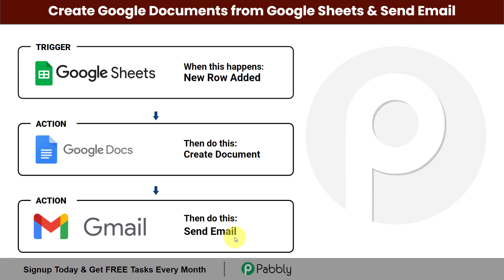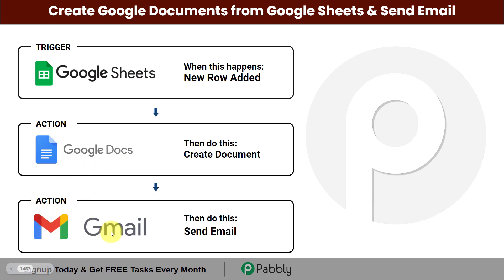To do this, I will have to integrate Google Sheets with Google Docs and Gmail, and I can do the same using Pabbly Connect. Here my trigger will be Google Sheets, then my action applications will be Google Documents and Gmail. This entire process can be automated and integrated. Let's begin.